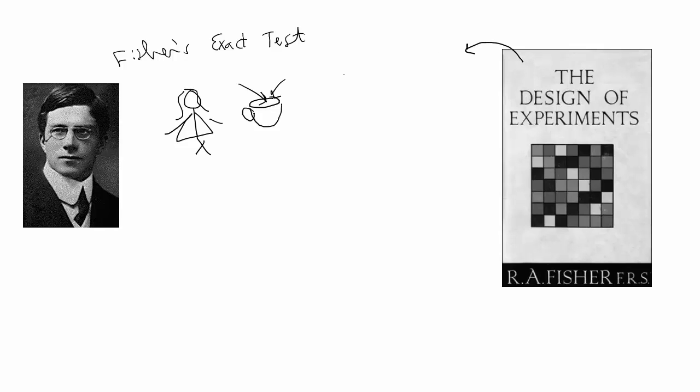The design of the experiment that he created for this test was that he was going to ask the lady to drink eight cups of tea, and she would know that four cups had milk poured in first, and four cups had tea poured in first, and she would drink the eight cups and then have to tell the researchers which cups she thought had milk poured in first. One of the first things to note was that this was a small sample size, because they didn't want to have the lady drinking 30 or more cups of tea to get a larger sample.